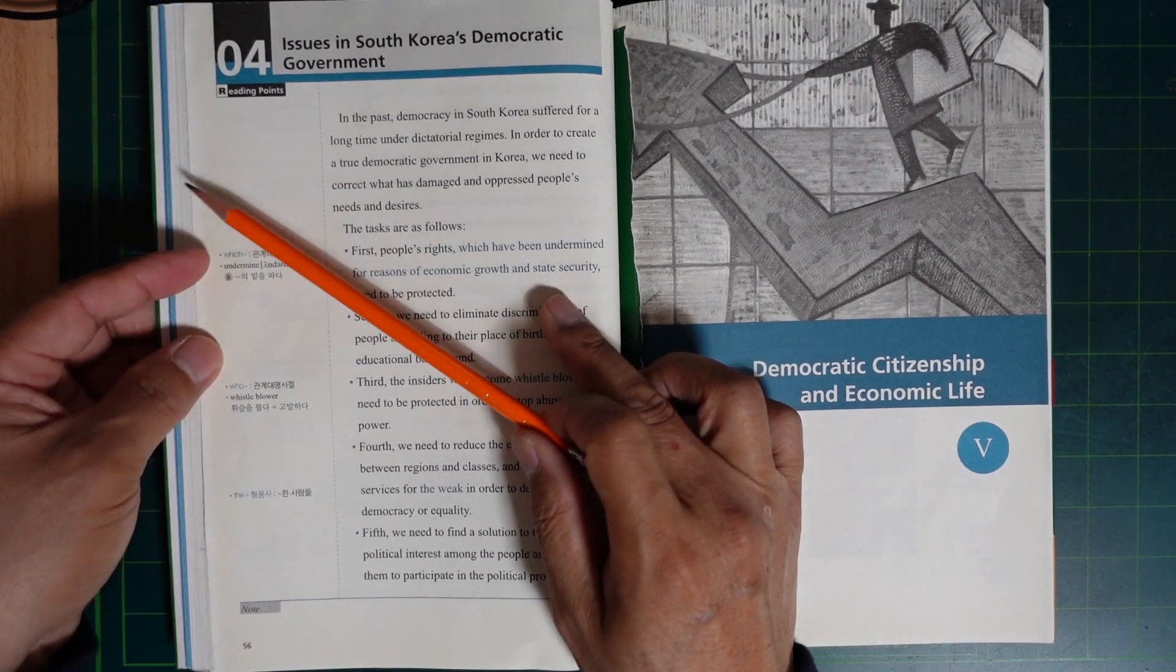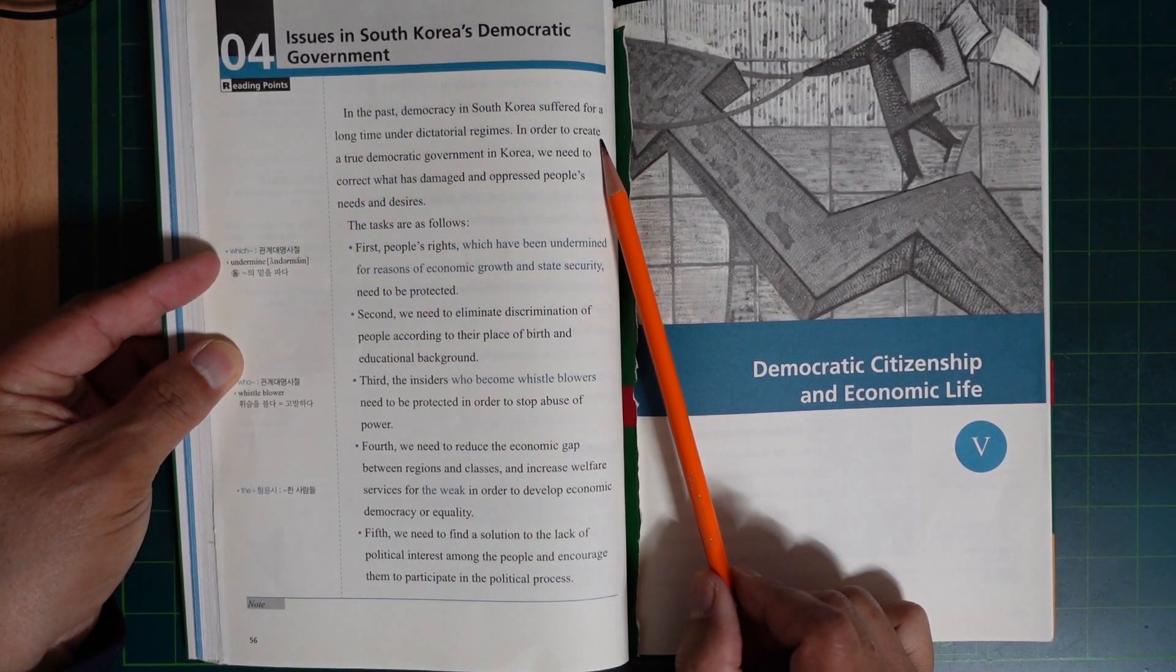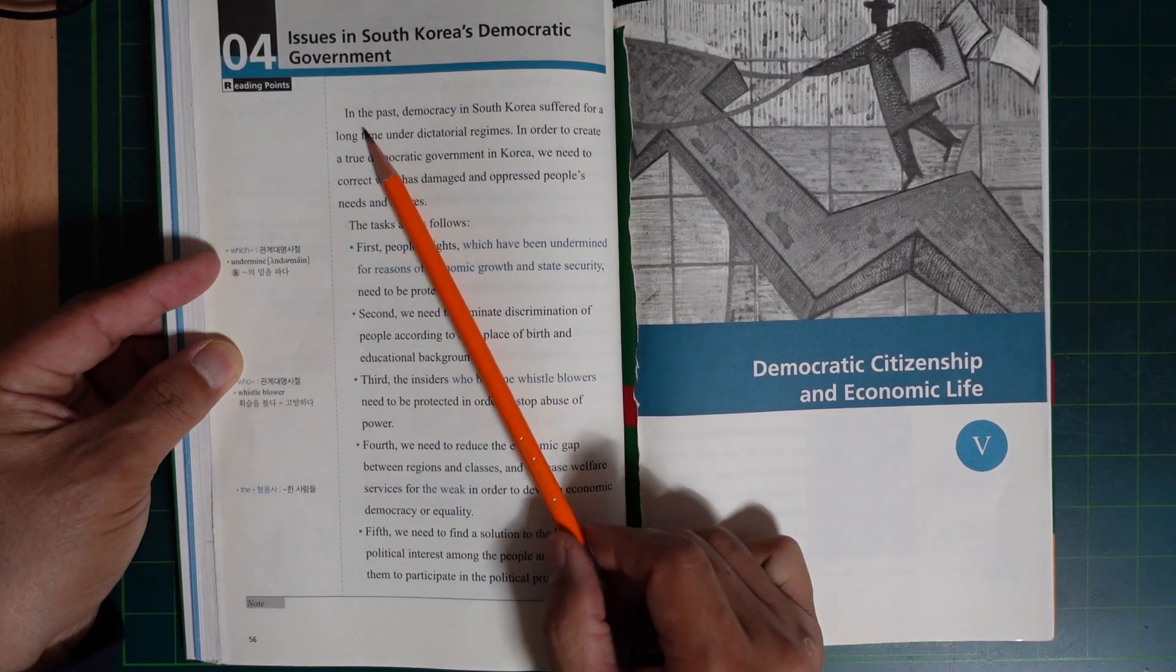Issues in South Korea's democratic government. In the past, democracy in South Korea suffered for a long time under dictatorial regimes. In order to create a true democratic government in Korea, we need to correct the parts that have damaged and oppressed the people's needs and desires.